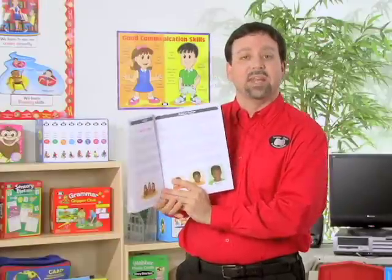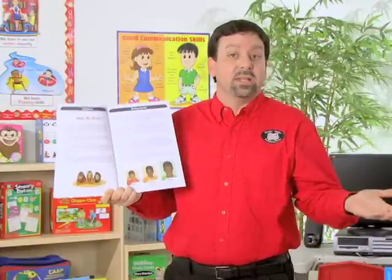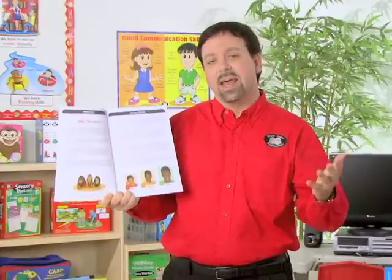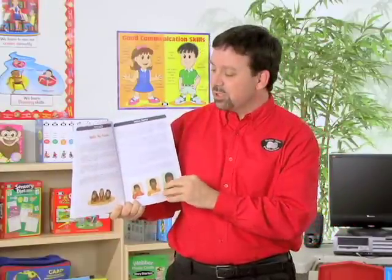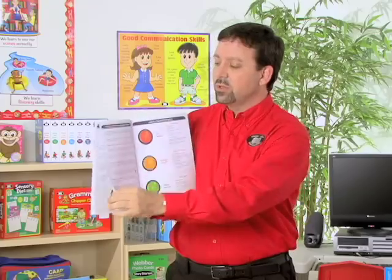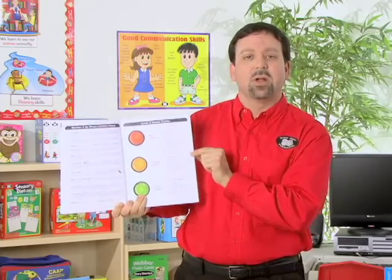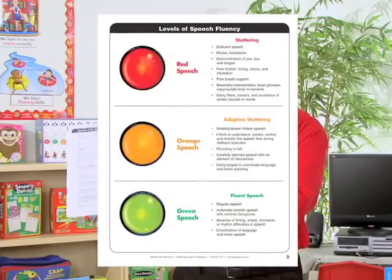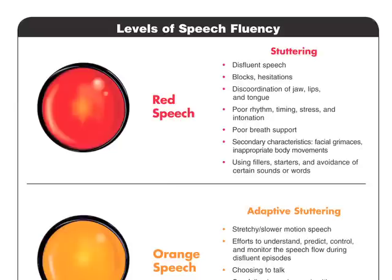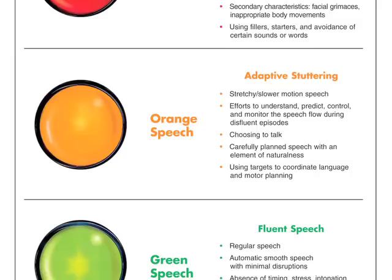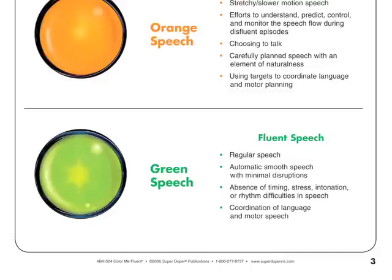We'll notice we're going to have an introduction for the student — what is fluency and how does it affect that student's speech? We'll also go over common terms for fluency as well as review our color schemes: red exhibiting stuttering behaviors, orange targeting specific strategies to improve fluency of speech, and green representing more fluent speech for the student.